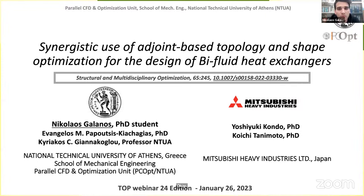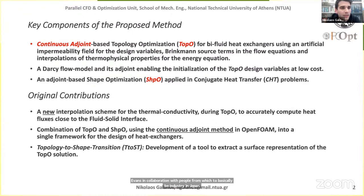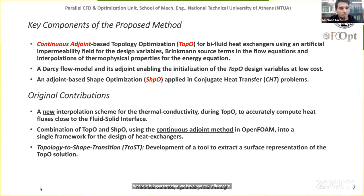This work was performed primarily at the Parallel CFD and Optimization Unit of the National Technical University of Athens, in collaboration with people from Mitsubishi Industries in Japan. The key components involve: adjoint-based topology optimization to design bi-fluid heat exchangers with non-mixing fluids; topology optimization using an artificial impermeability field that introduces Brinkmann source terms to the flow equations to weakly impose boundary conditions; and interpolations of thermophysical properties for the energy equation.